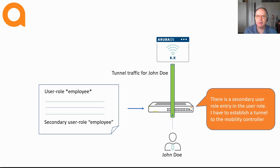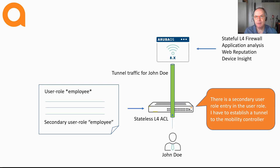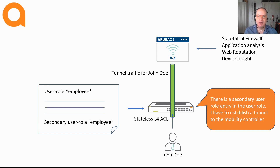This has some great advantages because for that wired client, all the services that are provided by the Mobility Controller become available. Whereas when traffic is switched locally, you only have a stateless firewall with ACLs. On the Aruba Mobility Controller, you also have services like AppRF that allow you to analyze the traffic, and WebCC, which is a web content reputation service — and all of this becomes available to the wired client.